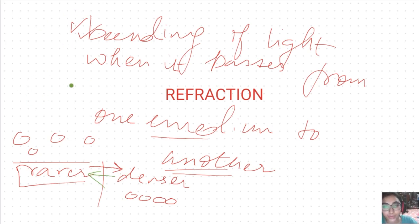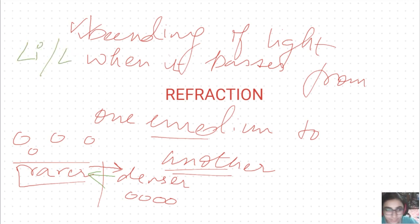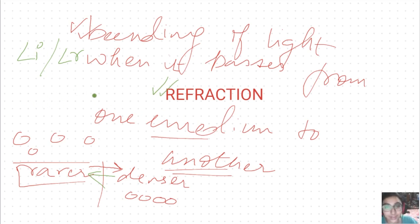Whenever we talk about incident rays or reflected rays, we always consider a normal. The angle of incidence and angle of reflection are both calculated with respect to a normal. In refraction too, we learn about angle of incidence and angle of refraction with respect to the normal. So the bending here is again with respect to the normal.